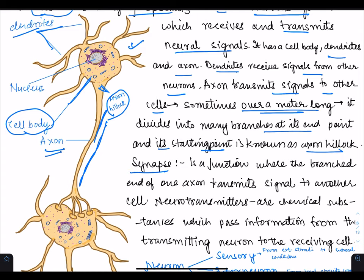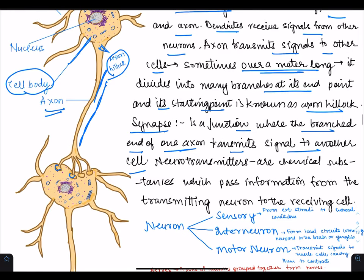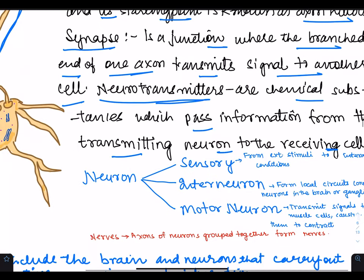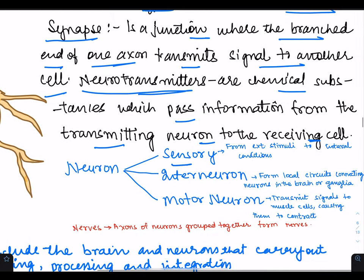Synapse — it is a junction where the branched end of one axon transmits a signal to another cell. Then neurotransmitters: they are chemical substances which pass information from the transmitting neuron to the receiving cell. Neurons can be sensory, interneuron, or motor neuron.